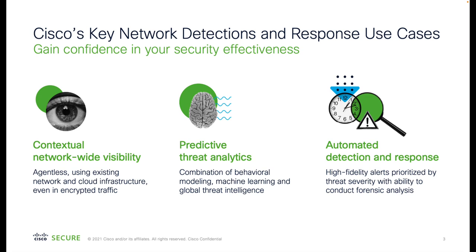Cisco NDR — Network Detection and Response solution — focuses on first getting visibility across your environment without having to install any agents. It's an agentless technology depending on the infrastructure you're using, to detect threats even in encrypted traffic. The second thing it does is detect threats using advanced techniques from machine learning, behavioral analytics, or threat intelligence.